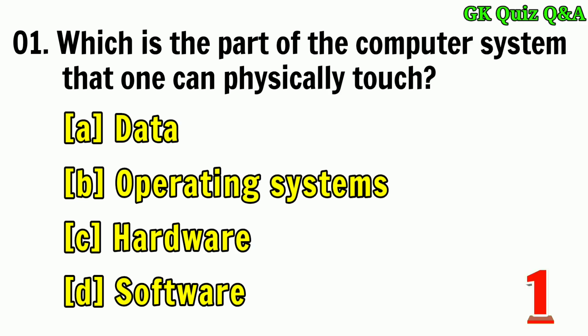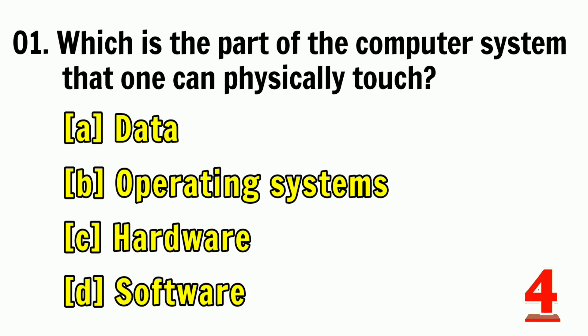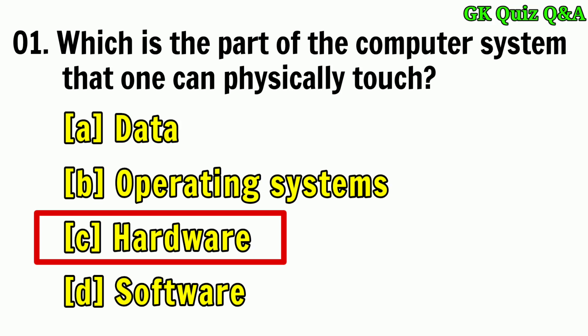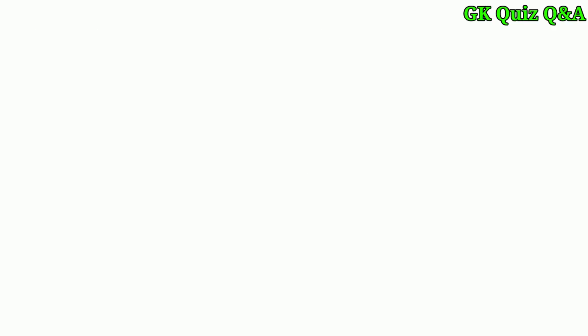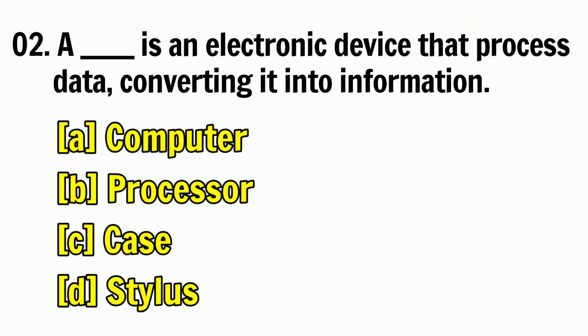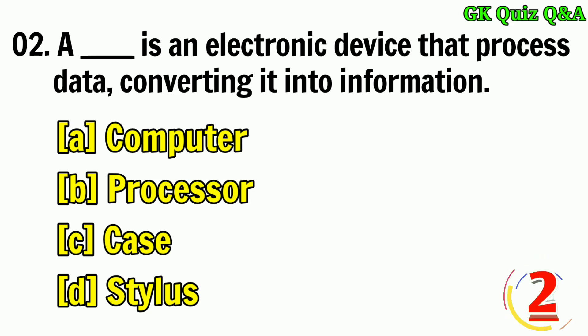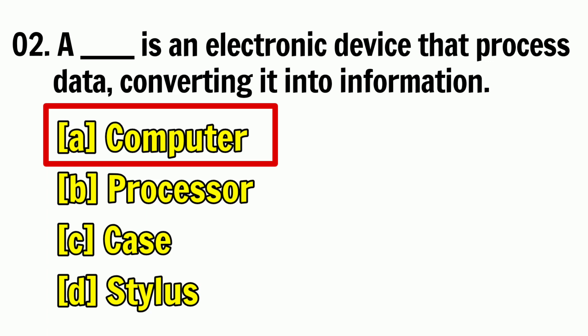Which is the part of the computer system that one can physically touch? Answer: C — Hardware. A dash is an electronic device that processes data, converting it into information. Answer: A — Computer.